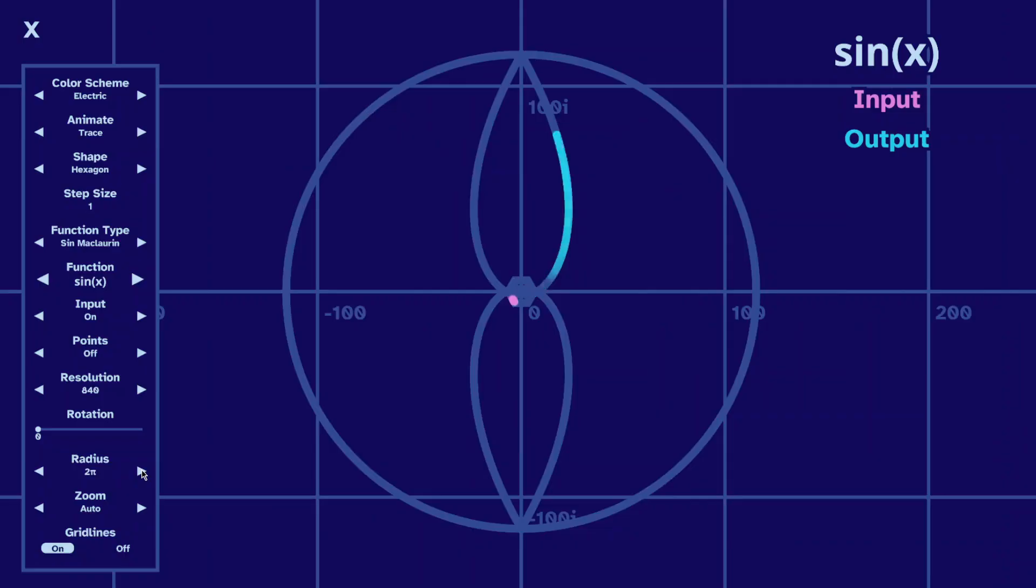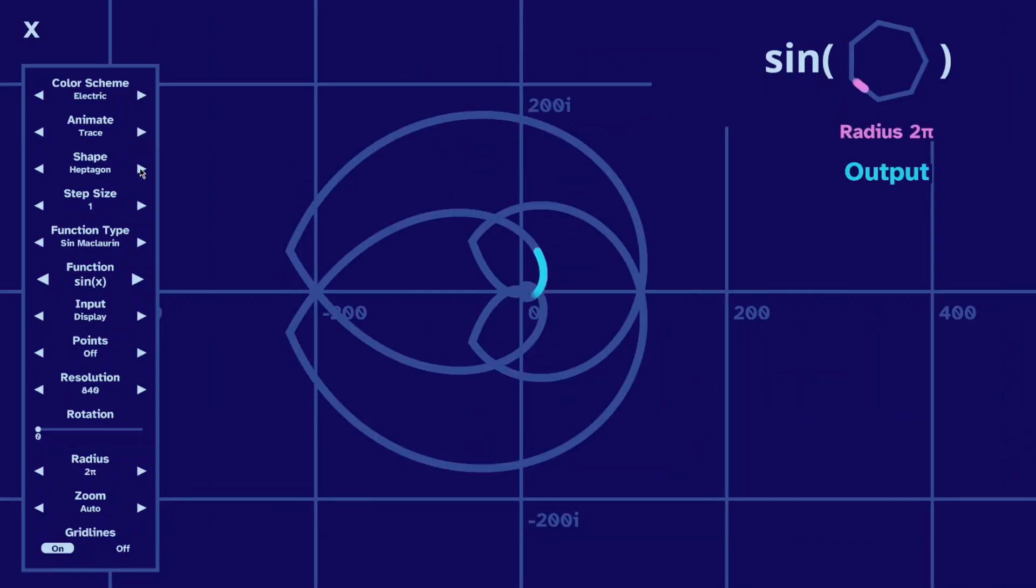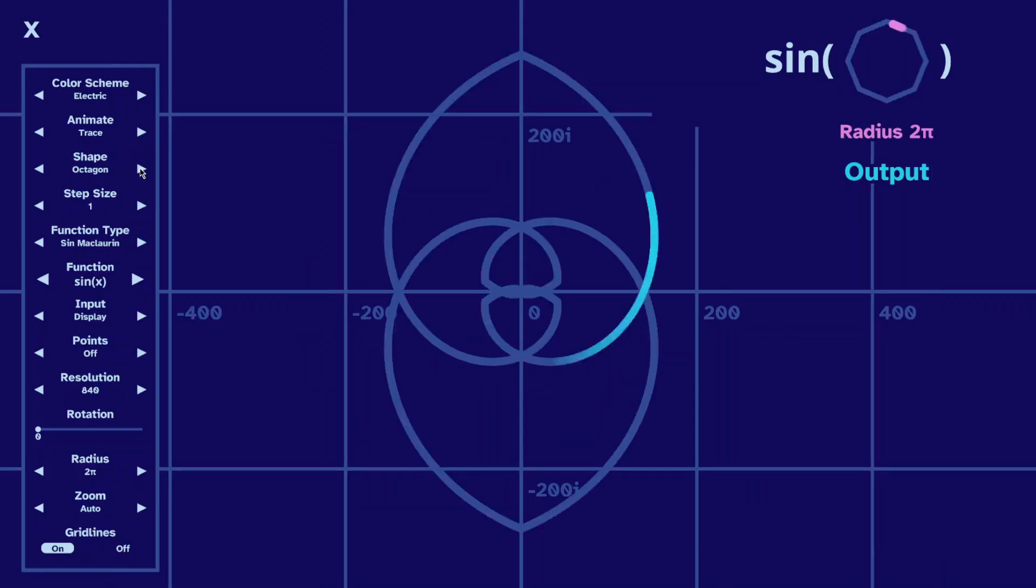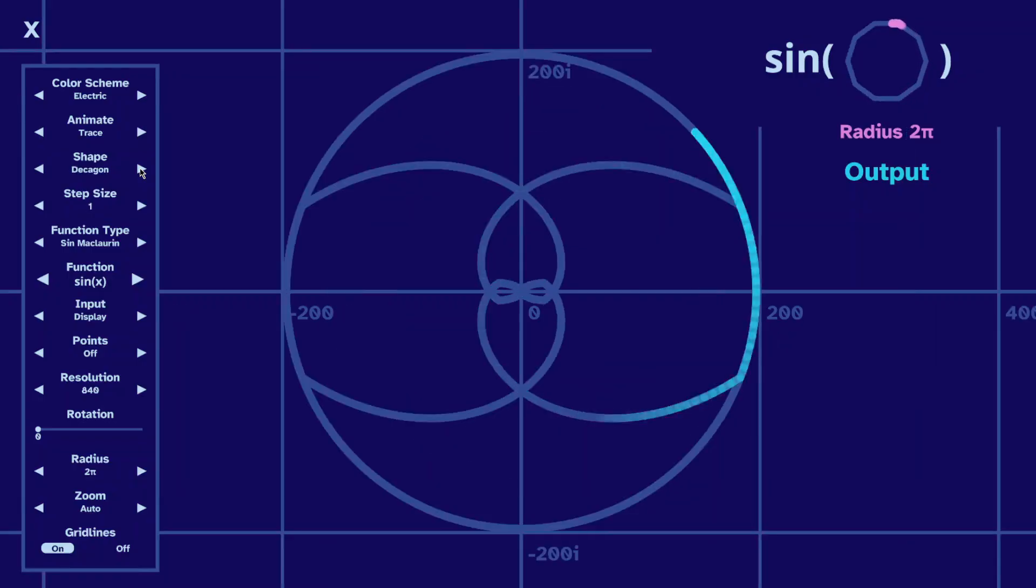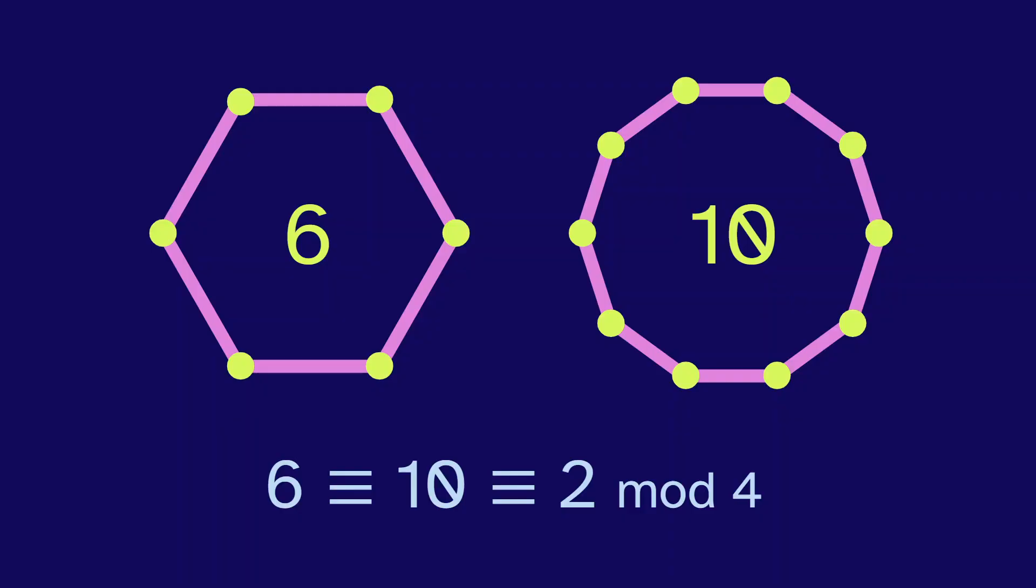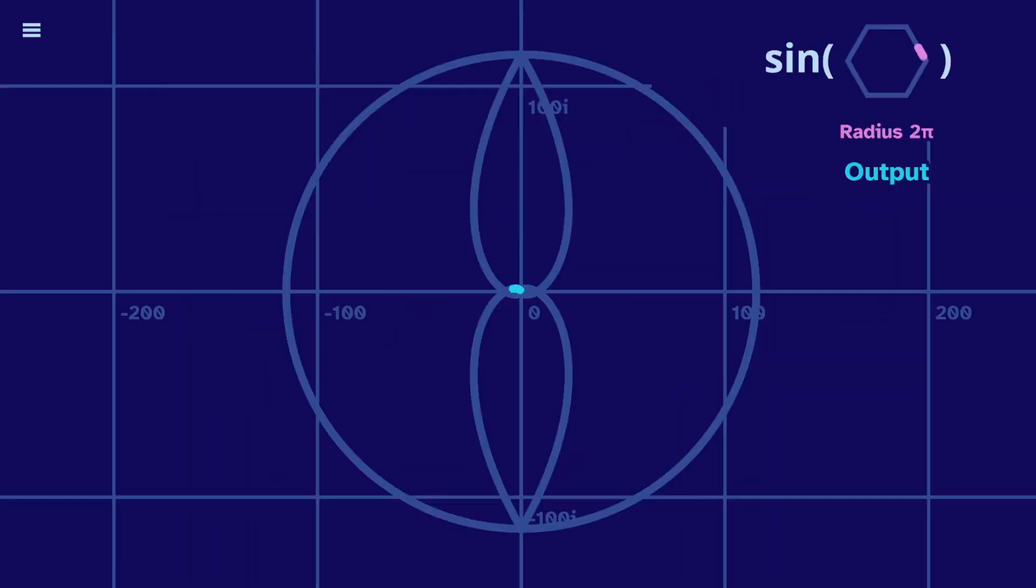But the output circle doesn't happen with all input shapes. Here's a heptagon, an octagon, a nonagon, and then the circle reappears as the output of a decagon. So what do these have in common? They have 6 and 10 points, which are both 2 mod 4, which means that they have these horizontal lines. And it's these lines that make that circle.